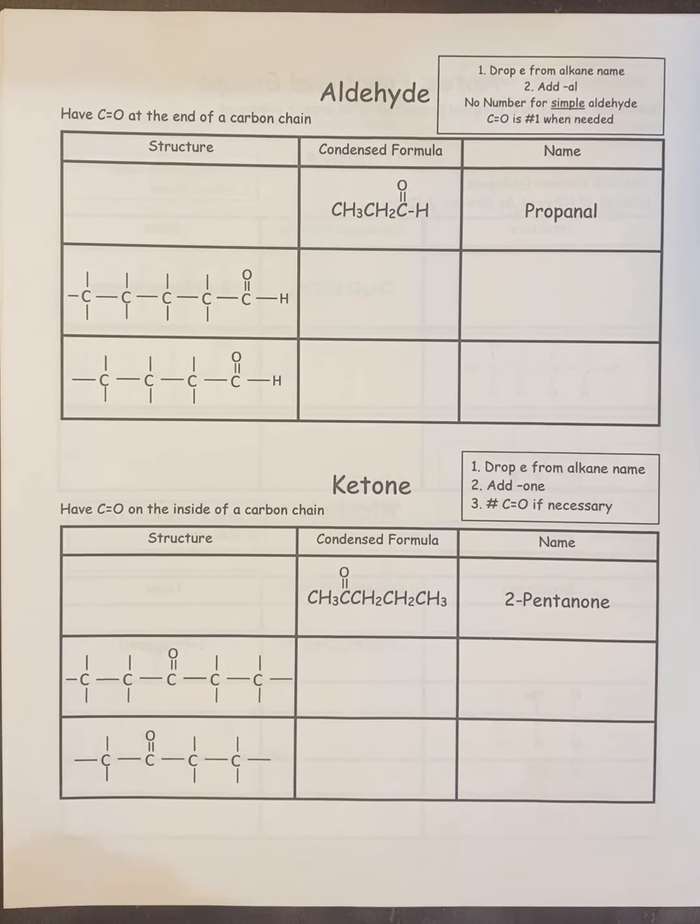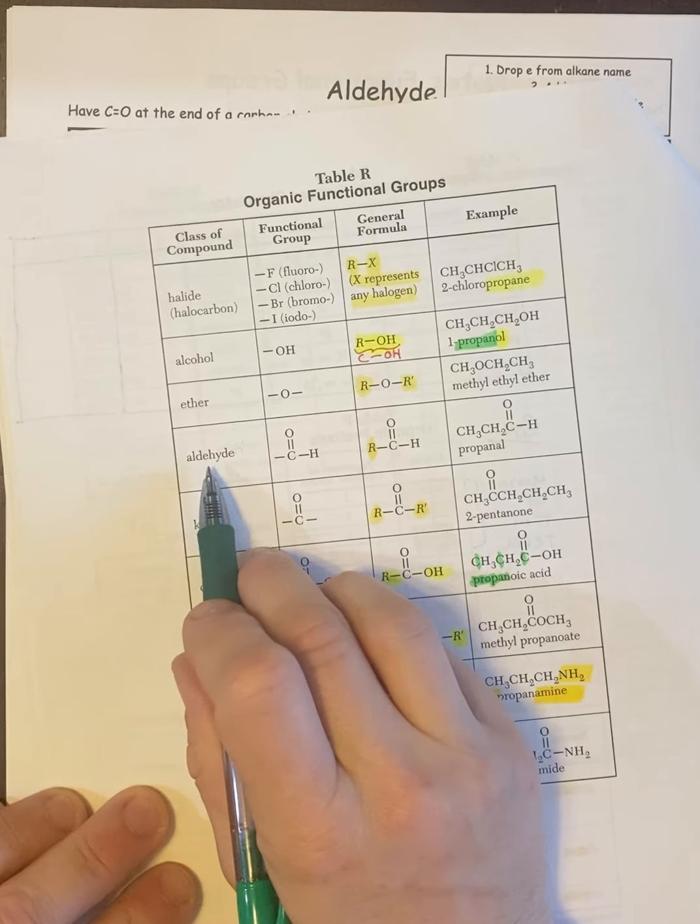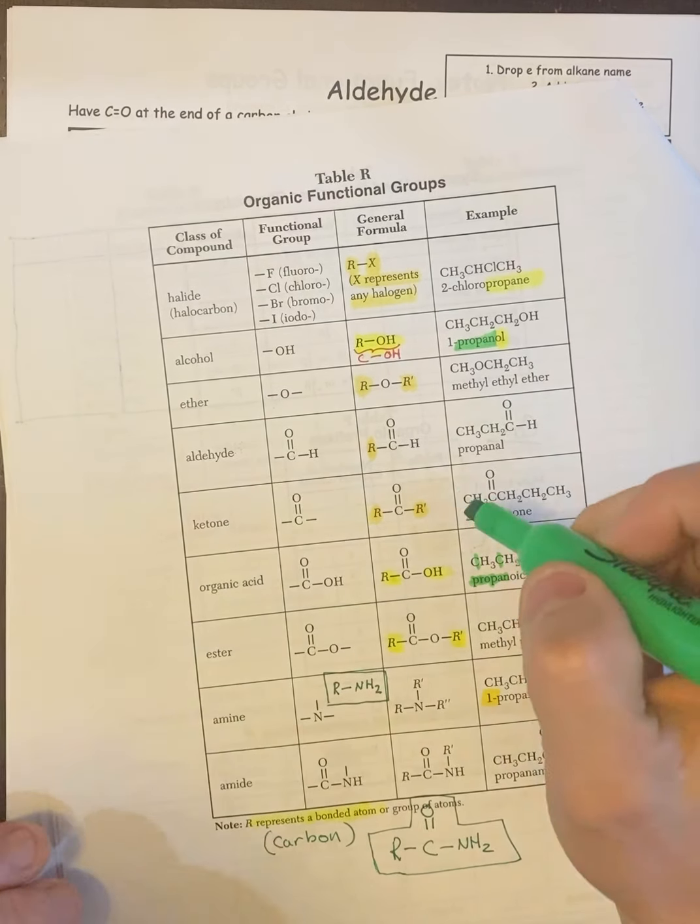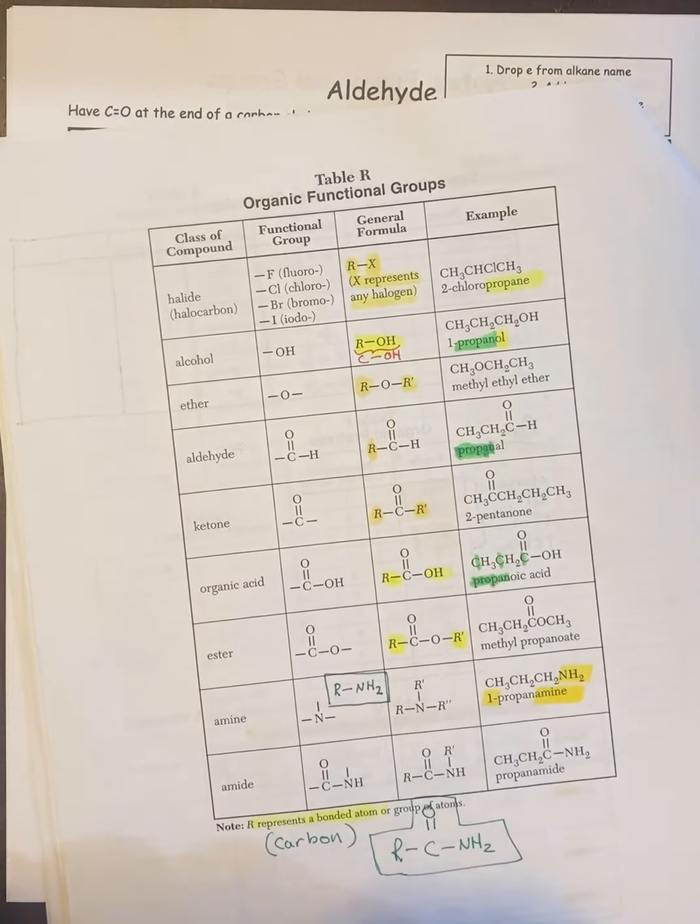The next section we're going to do is aldehydes and ketones. So we'll start with aldehydes. And so aldehydes are right here. And if you notice, they would do three carbons in a row. So they would call it propane. And then they dropped the E just like normal and they added AL ending.